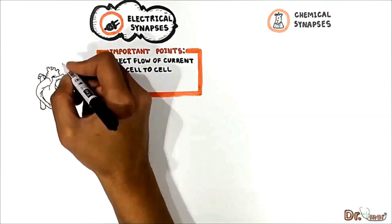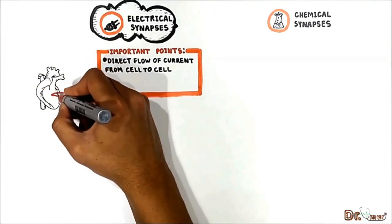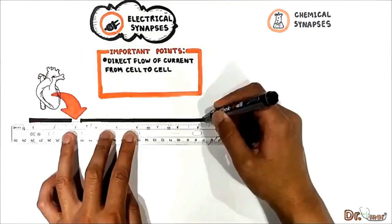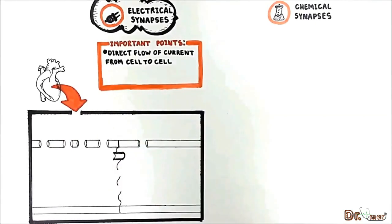Cardiac and single unit smooth muscle cells have these electrical synapses and I will explain it using an example of the cardiac muscle cells. So here I will zoom to cardiac cells.